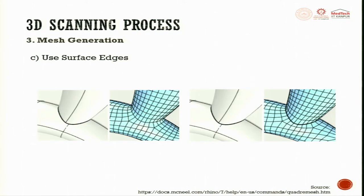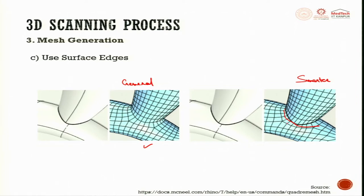Next, we use surface edges. There is a general system and a smarter system. If we have a poly surface in an extrusion system, it specifies whether mesh edges will be created along sub-face boundaries on the input object. In the general system, it ignores the sub-face boundaries. In the smarter system, these sub-face boundaries are retained, bringing a more meaningful algorithm for the meshes that we have.